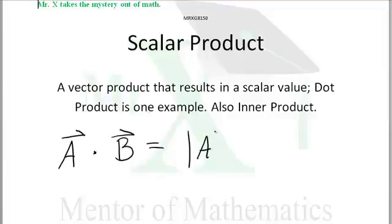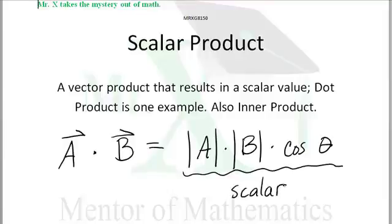What we do is we take the magnitude of that A vector times the magnitude of that B vector times the cosine of the angle in between and this ends up strictly scalar. Just a number.